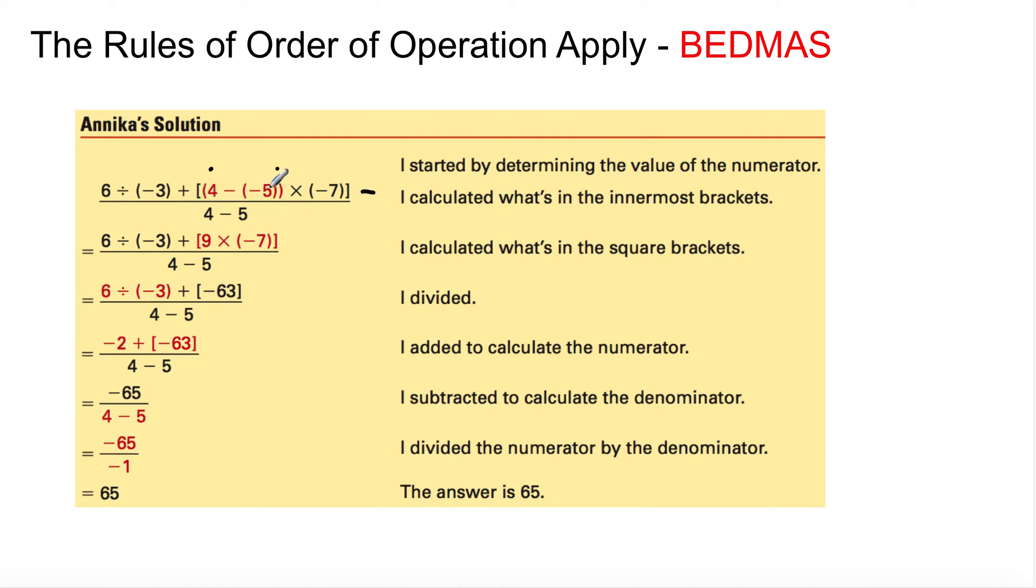And when you work with this operation, 4 minus negative 5, it's like saying 4 plus 5 because there's two negatives there. 9. So this becomes 9 times negative 7. Boom, there it is.